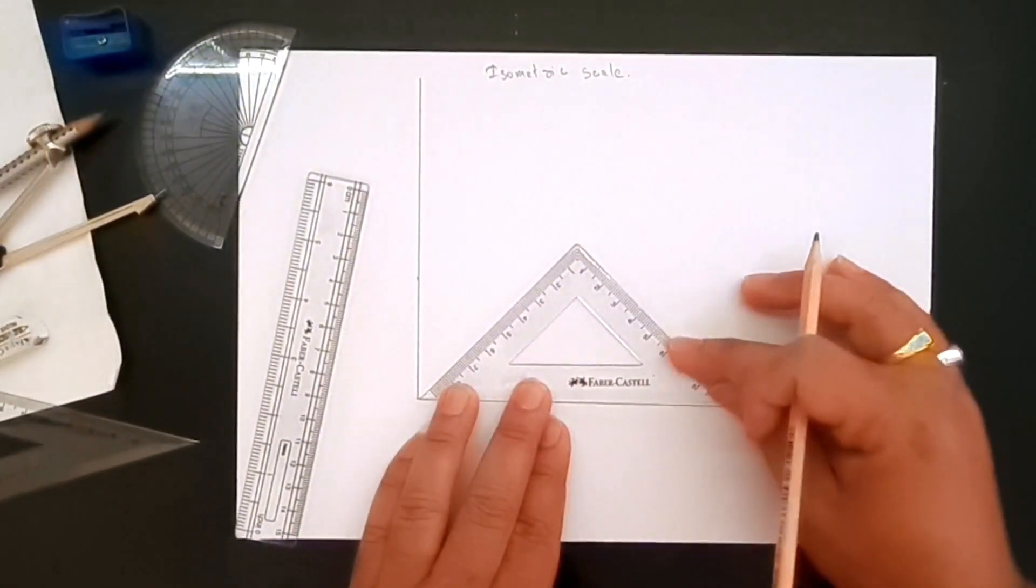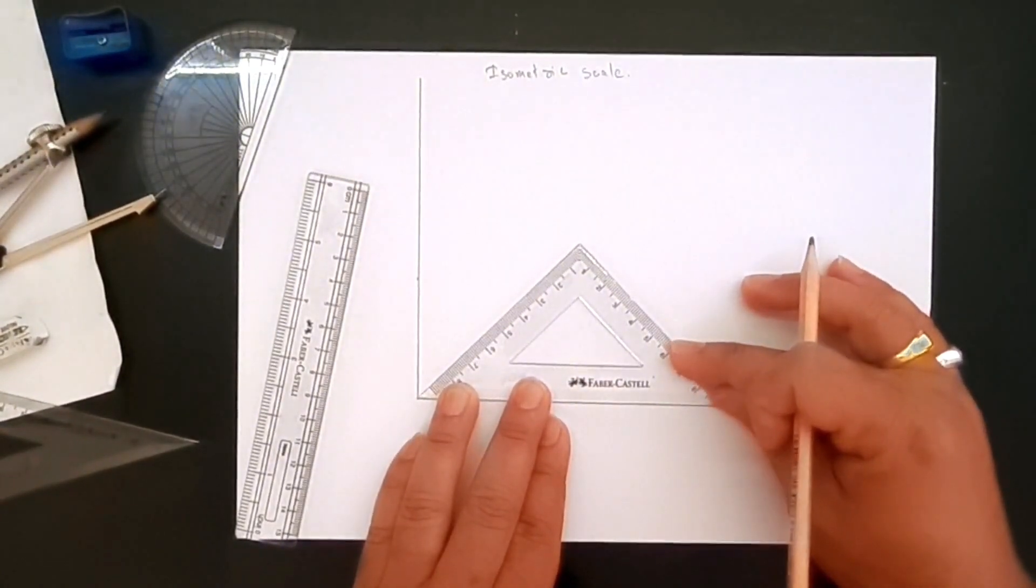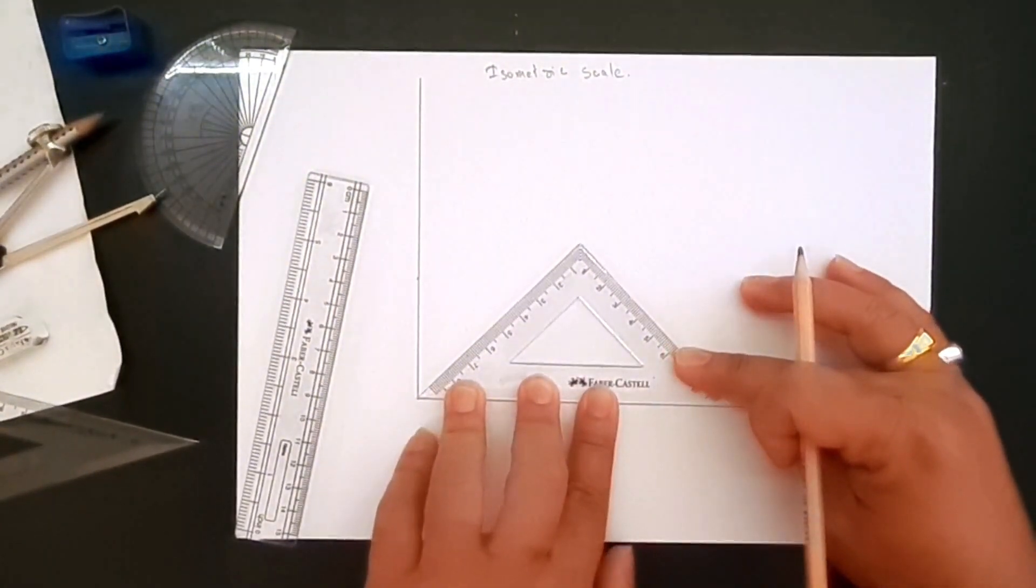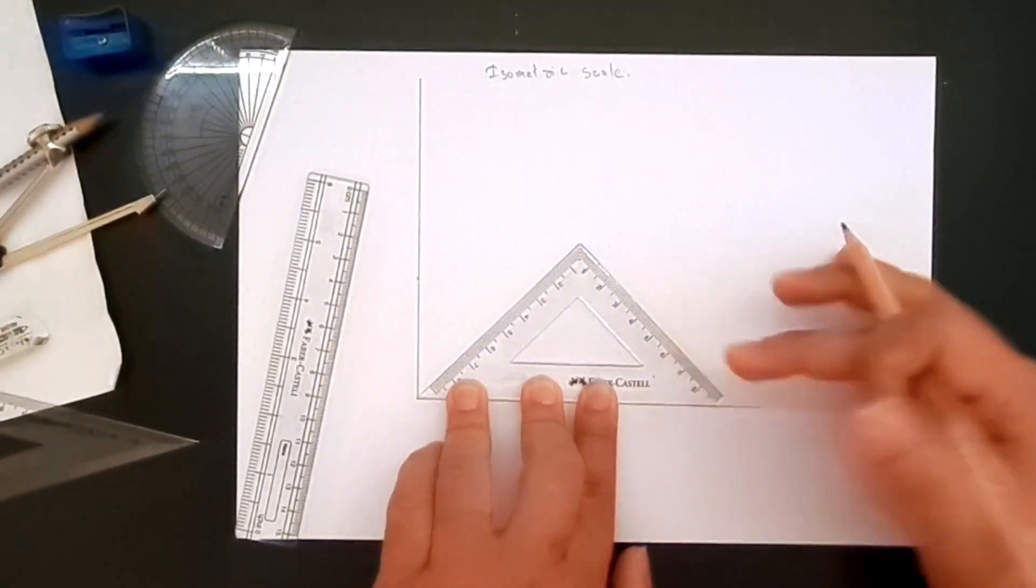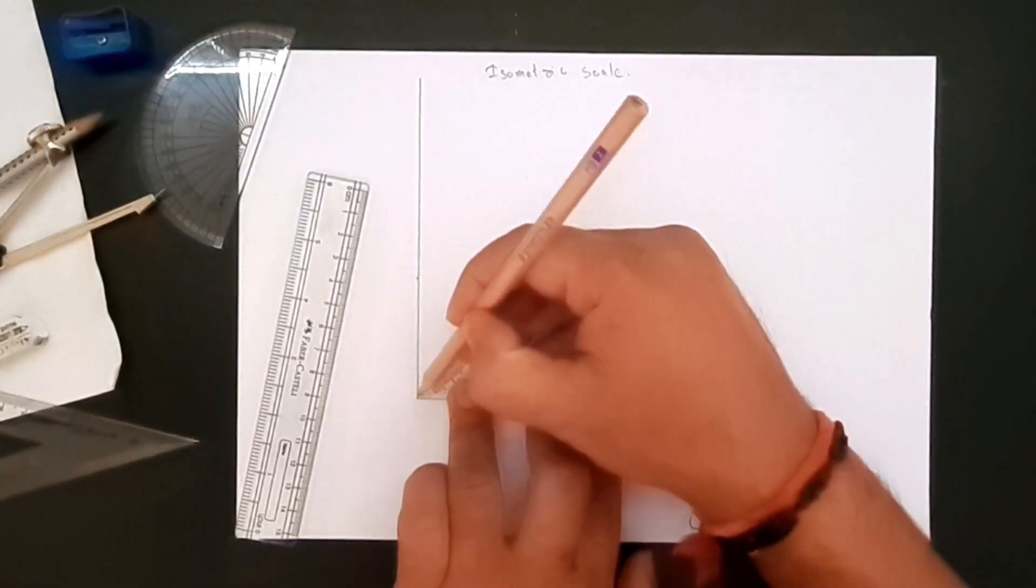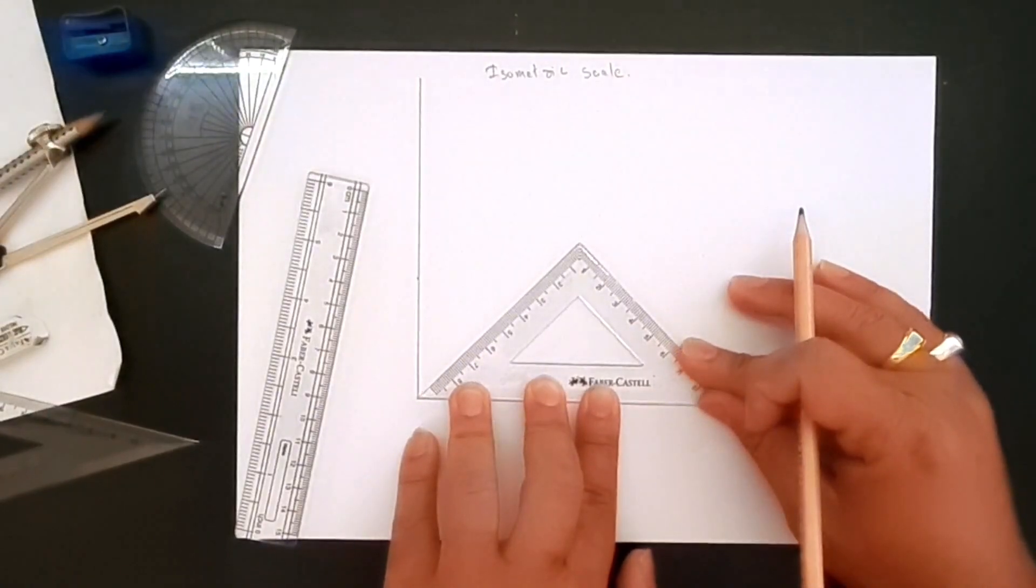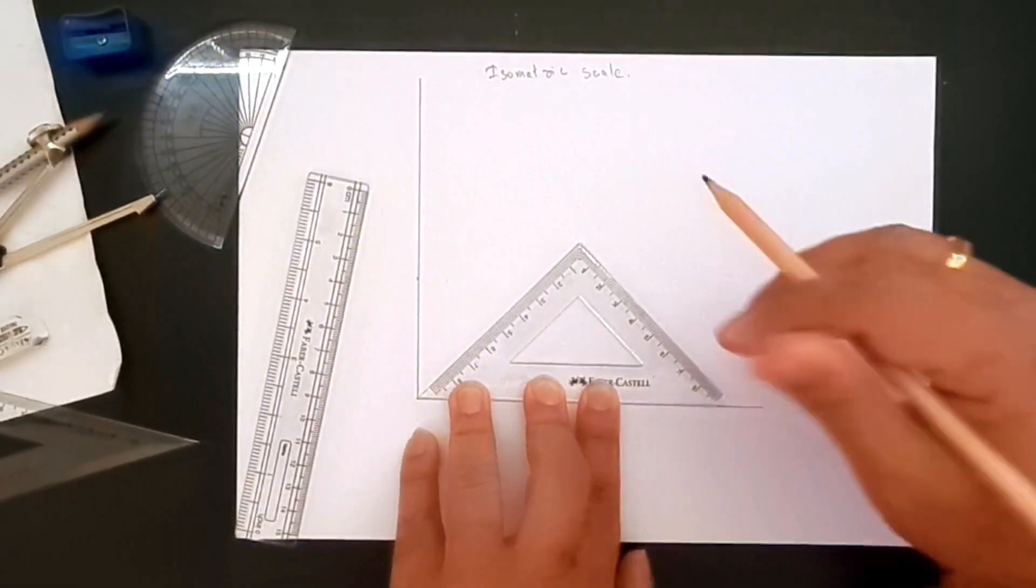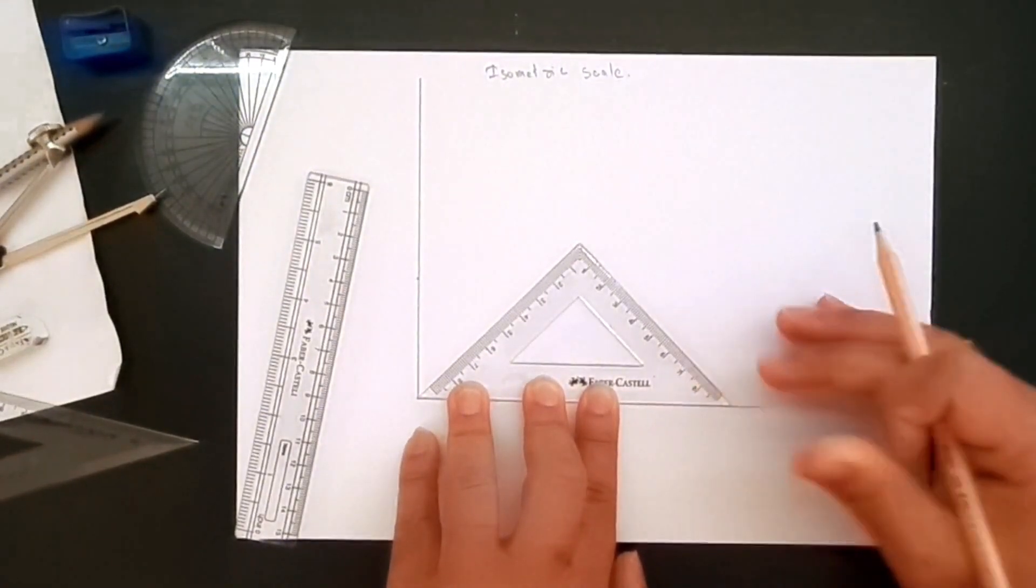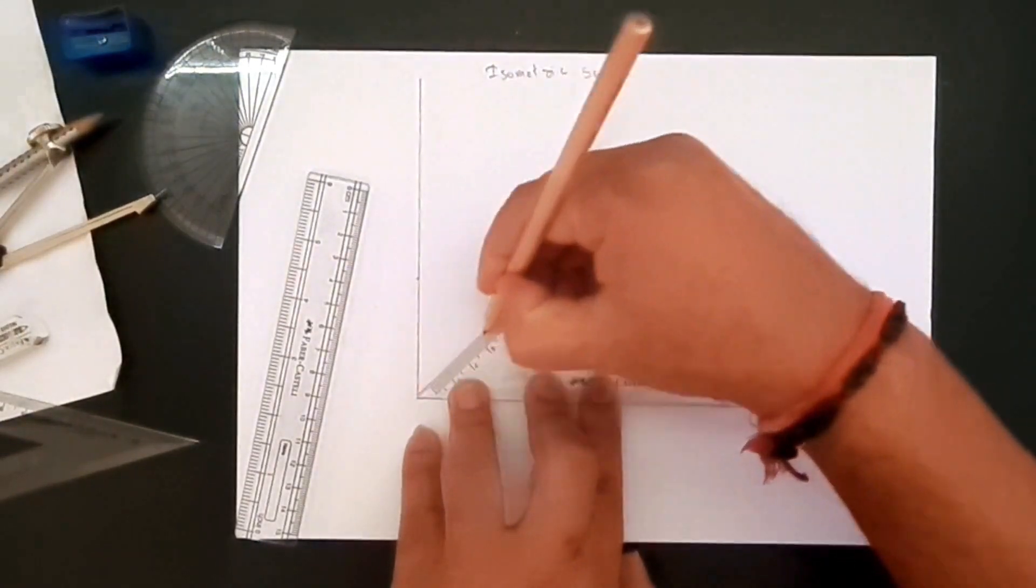I can use set squares and create a line, but I can also use compass or the protractor to do the same thing. So let's create this line at 45 degrees.